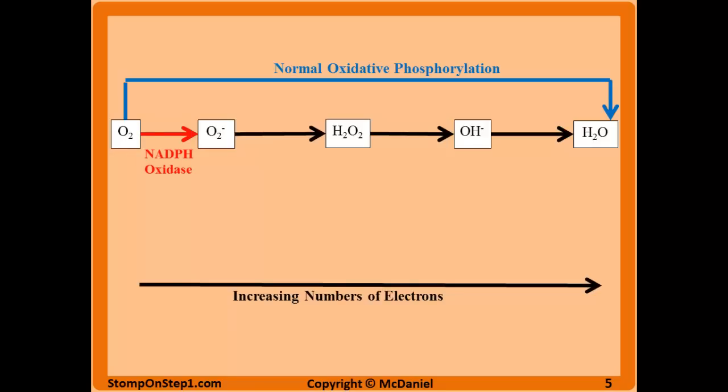Oxygen is turned into superoxide by an enzyme called NADPH oxidase — mainly found in neutrophils — and I've put that in red because it's generating a free radical. Superoxide dismutase (SOD) is an enzyme that converts superoxide to hydrogen peroxide, shown in green because it's getting rid of a free radical — going from superoxide, which is a free radical, to hydrogen peroxide, which is not.